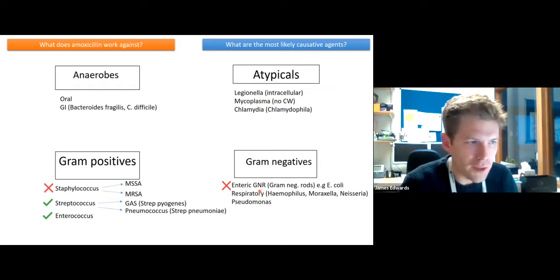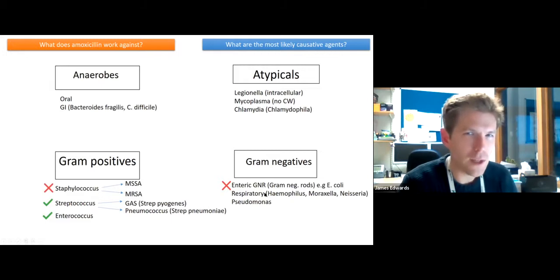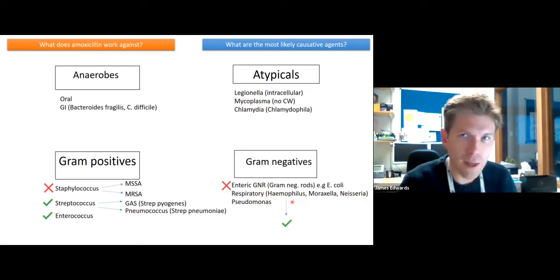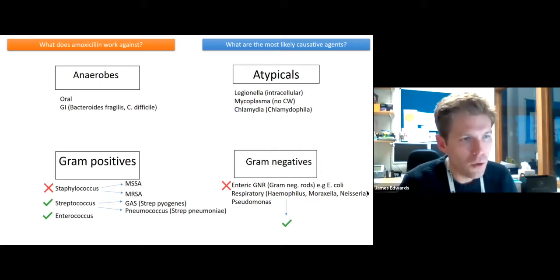With the respiratory organisms — the ones that, just from the name, you might expect to be important here — the good news is that amoxicillin works against many strains of Haemophilus influenzae. That's exactly what we want.